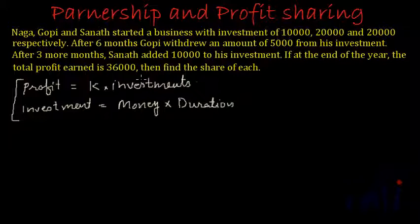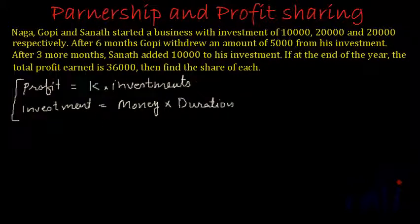The next part of the statement says: if at the end of the year the total profit earned is 36,000, then find the share of each. Profit is directly proportional to the investment, and investment is the product of amount of money and the duration for which that money is invested. So if we can find the investment for each individual, we can find their profits, because the profits will be in the same ratio as the investments. So we will start one by one, and these two relations will help us in calculating profits.